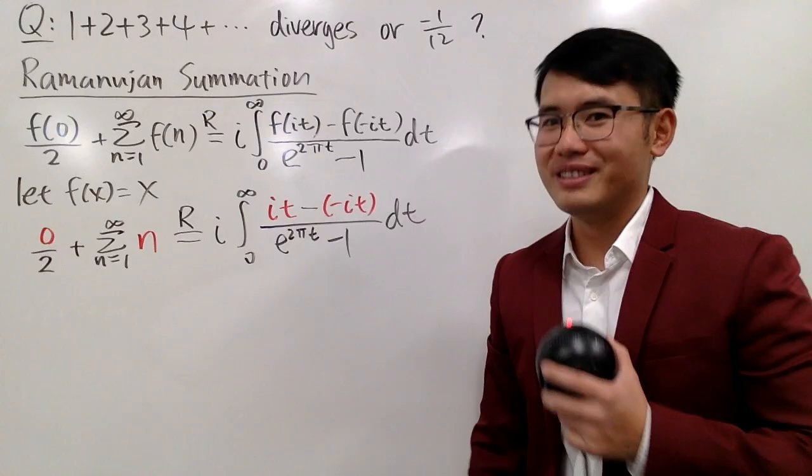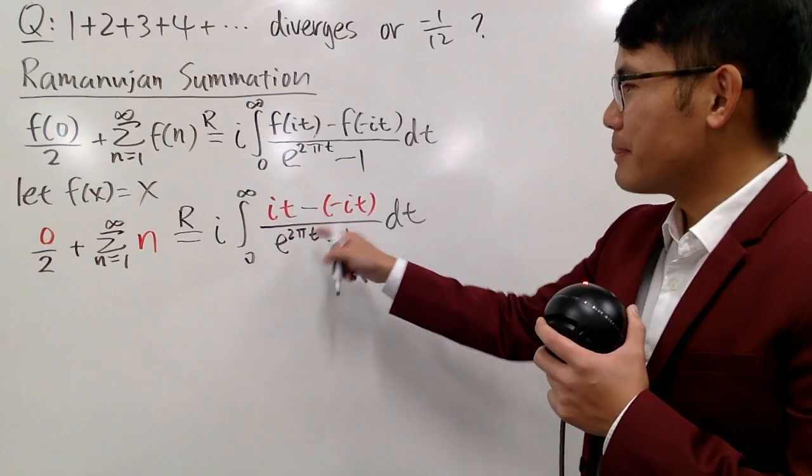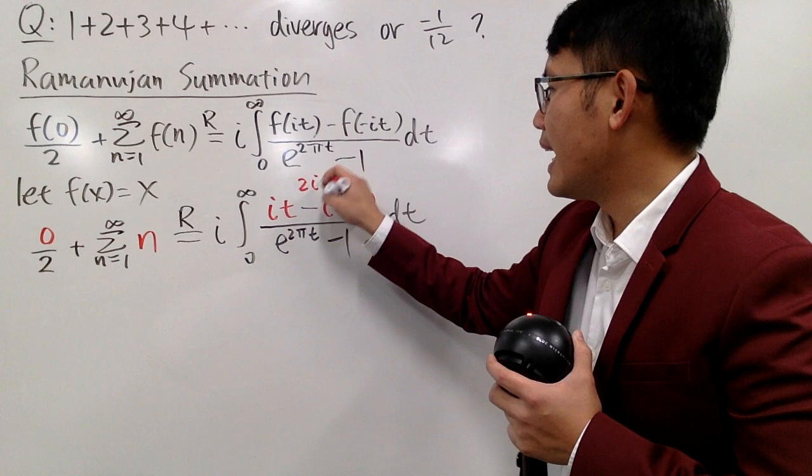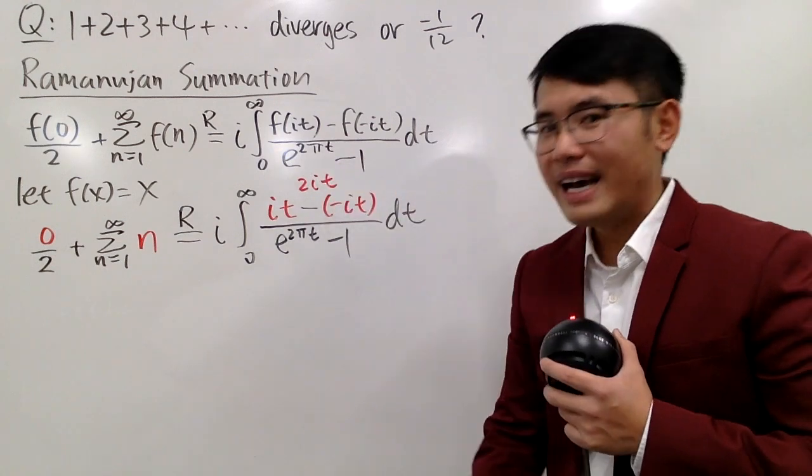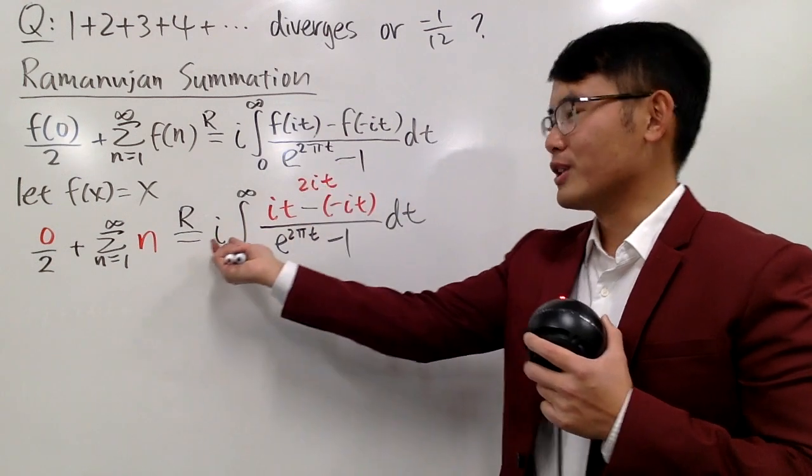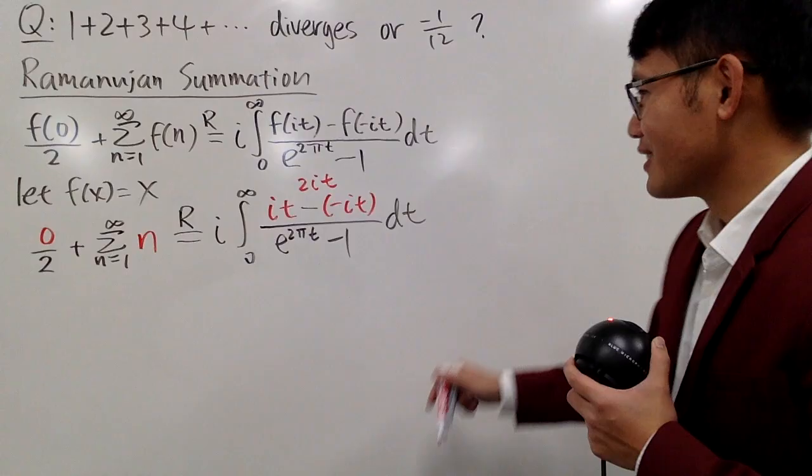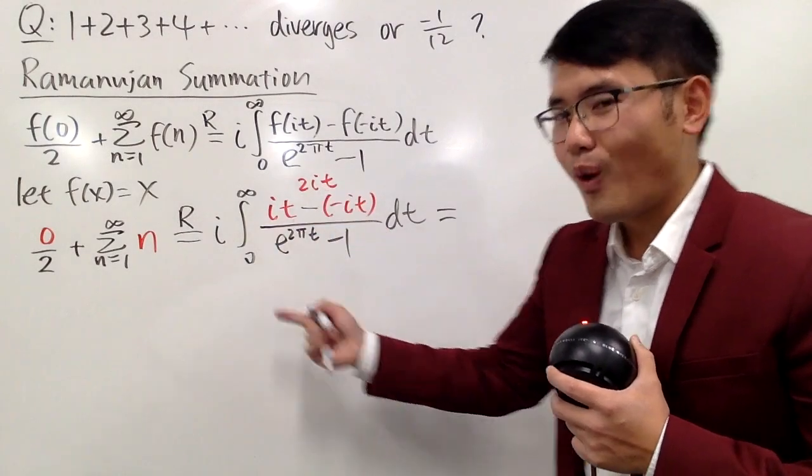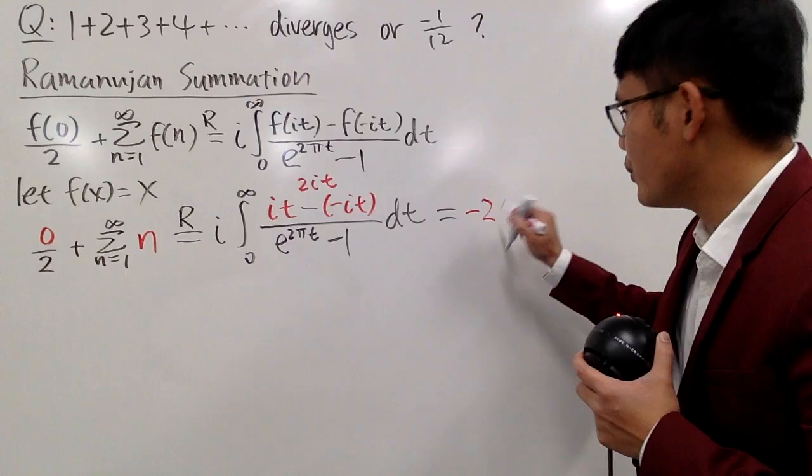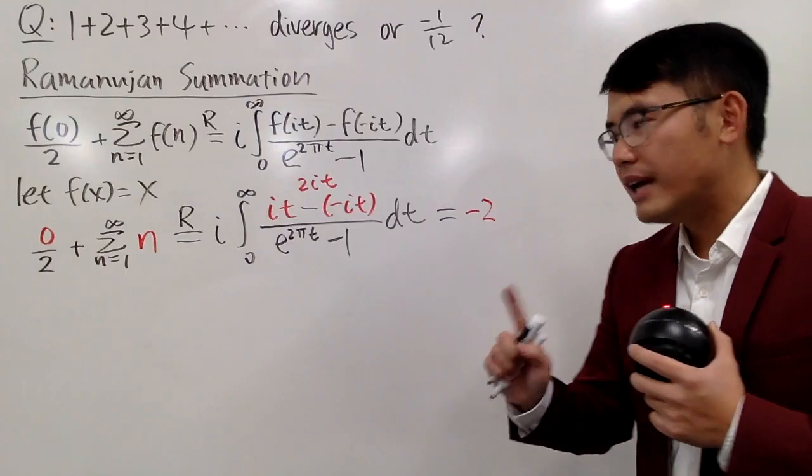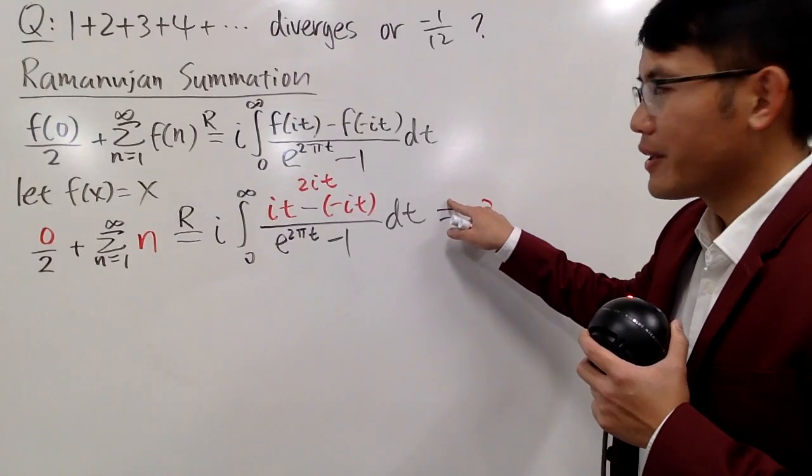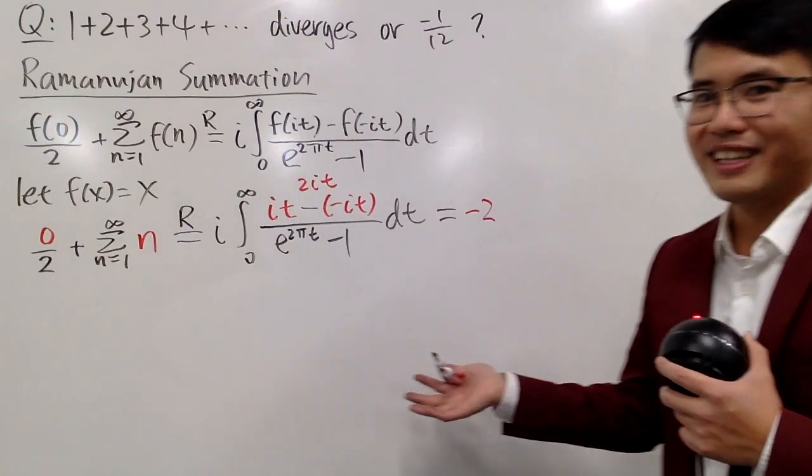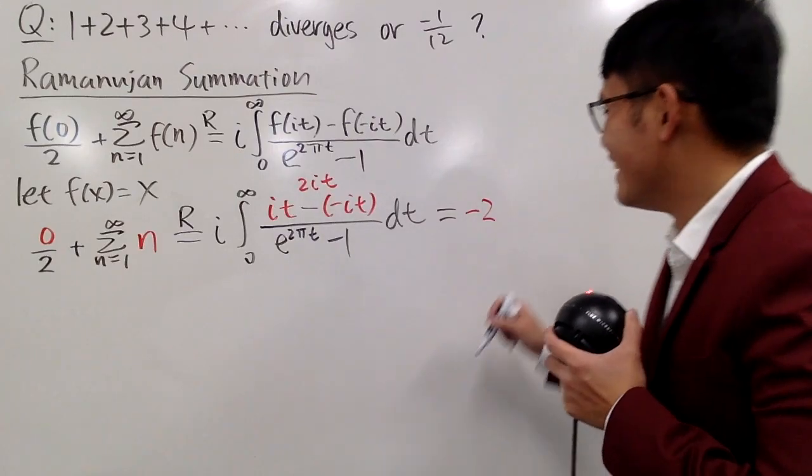And then over this, which is e to the 2 pi t, minus 1, dt. And now we just have to take care of this integral. You see, on the top, we have i t plus i t, so that's 2i t. And 2i, we can multiply with the i, just a constant multiple. So you see, i times i is negative 1, so I will write down negative 2 all the way in the front.